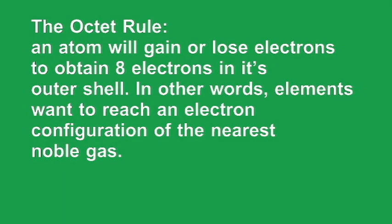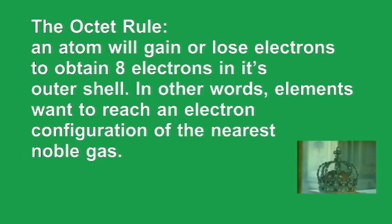The octet rule states that an atom will gain or lose electrons to obtain 8 electrons in its outer shell. In other words, elements want to reach an electron configuration of the nearest noble gas. The word octet means a group of 8.